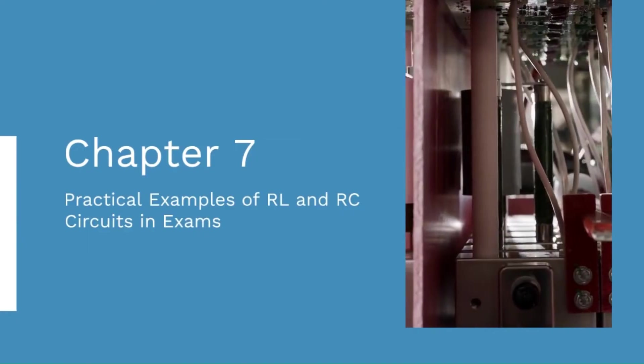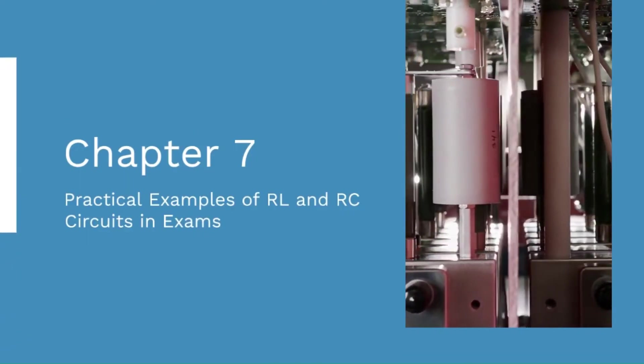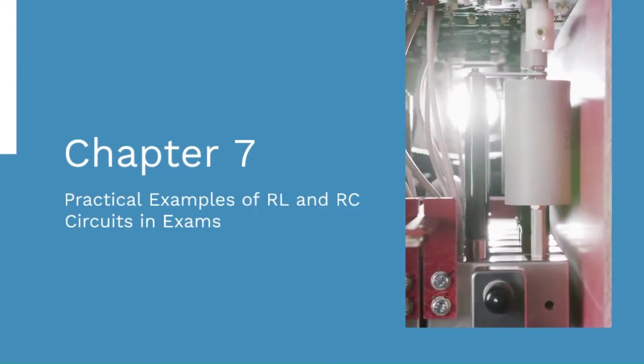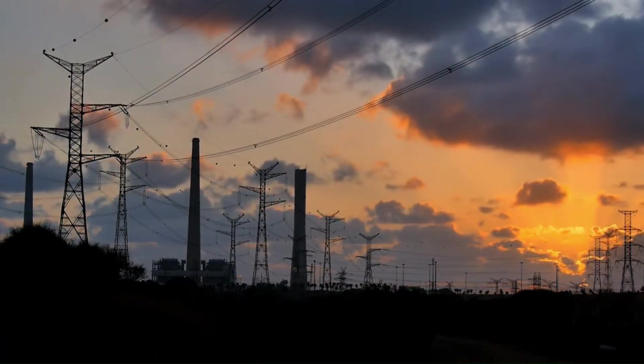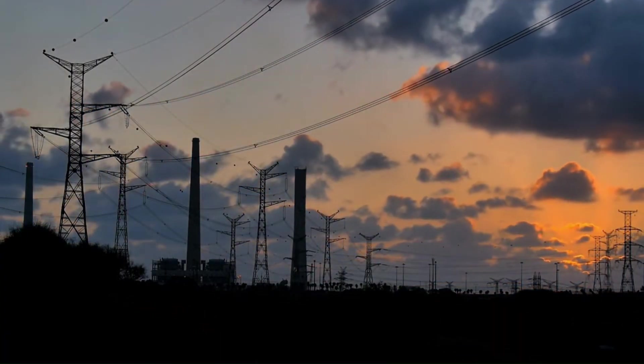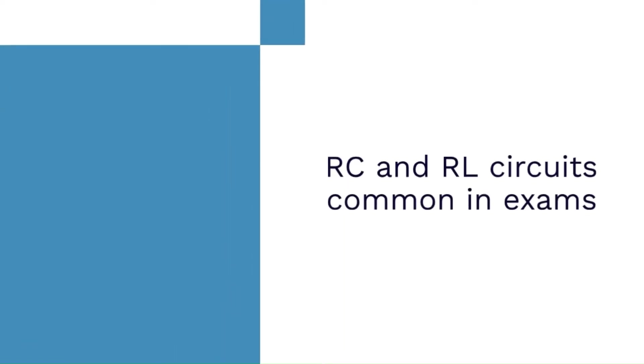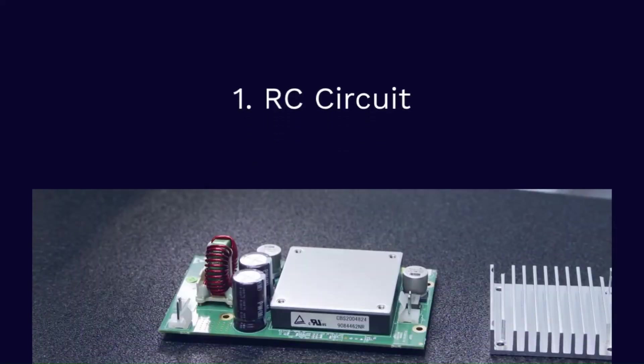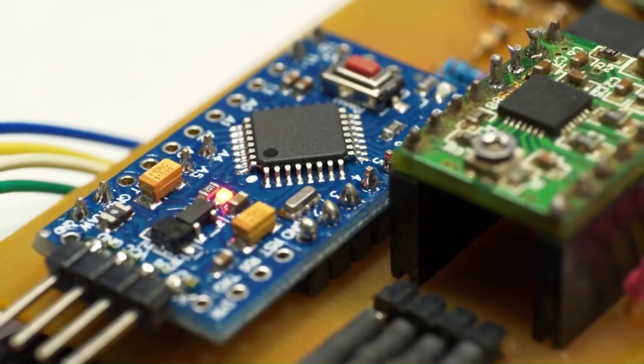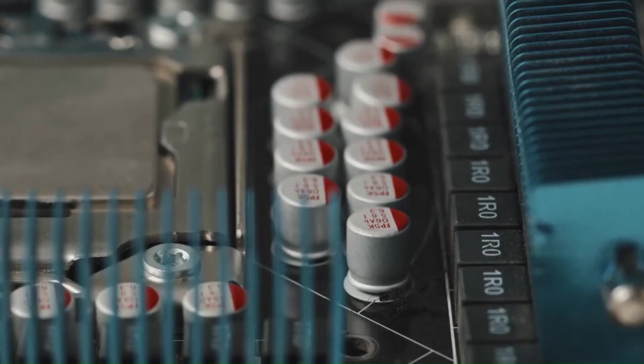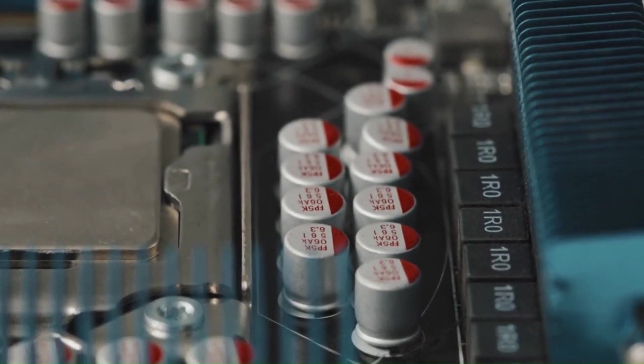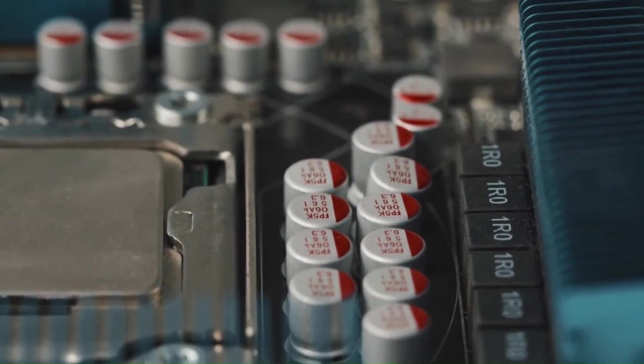Chapter 7: Practical Examples of RL and RC Circuits in Exams. Now that we know the basics, let's talk about how these elements work together in the circuits, which are common in your SSC JE and RRB exams. In an RC circuit, the resistance slows down the current while the capacitor charges or discharges, creating a time delay.